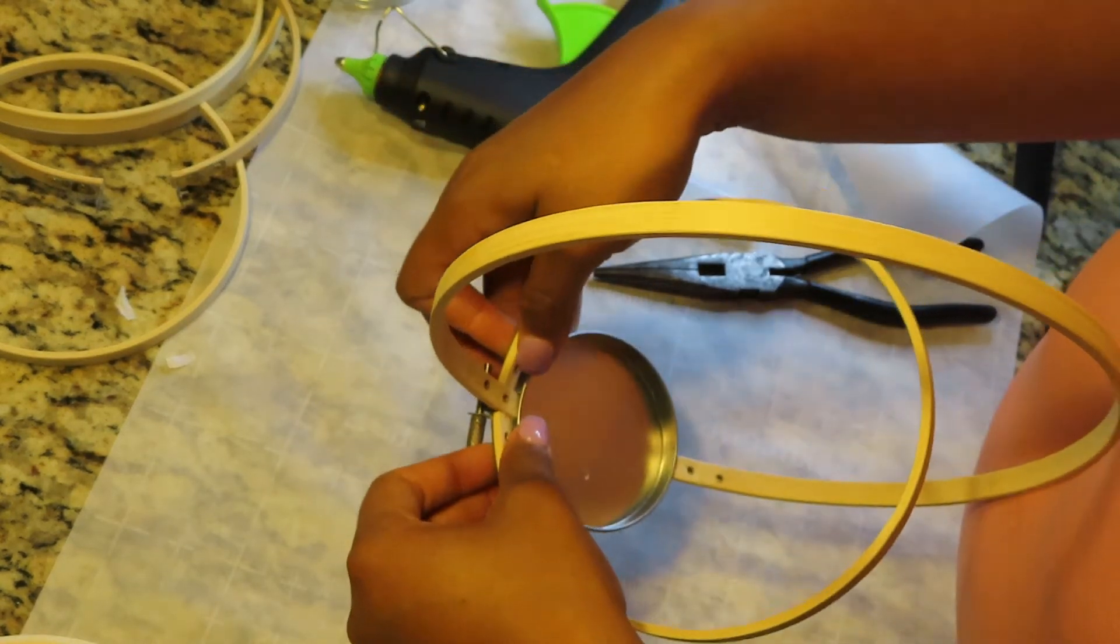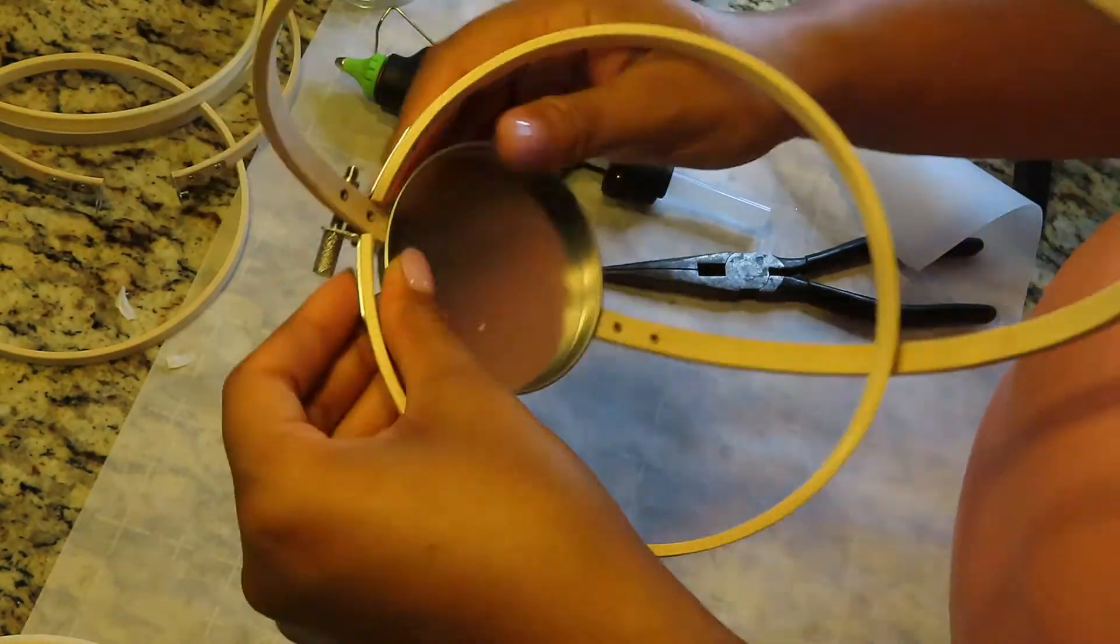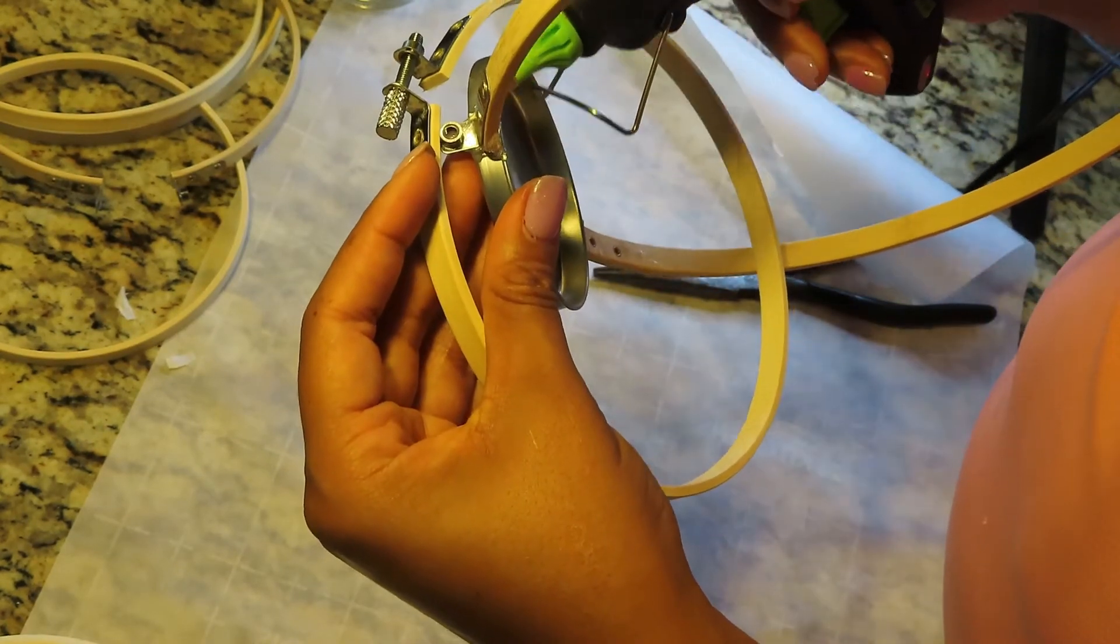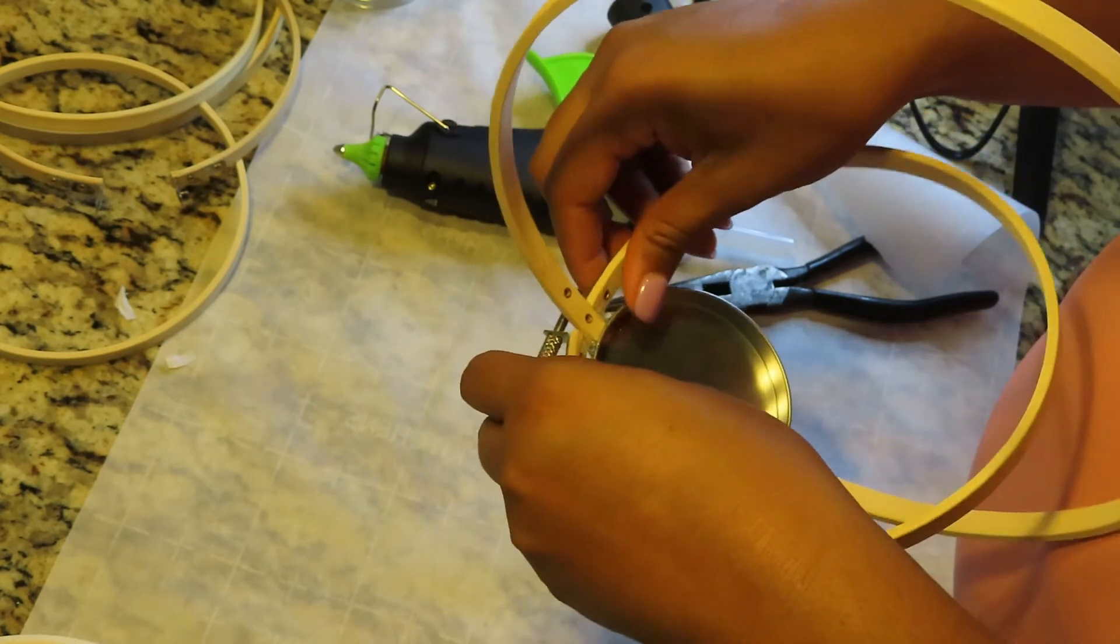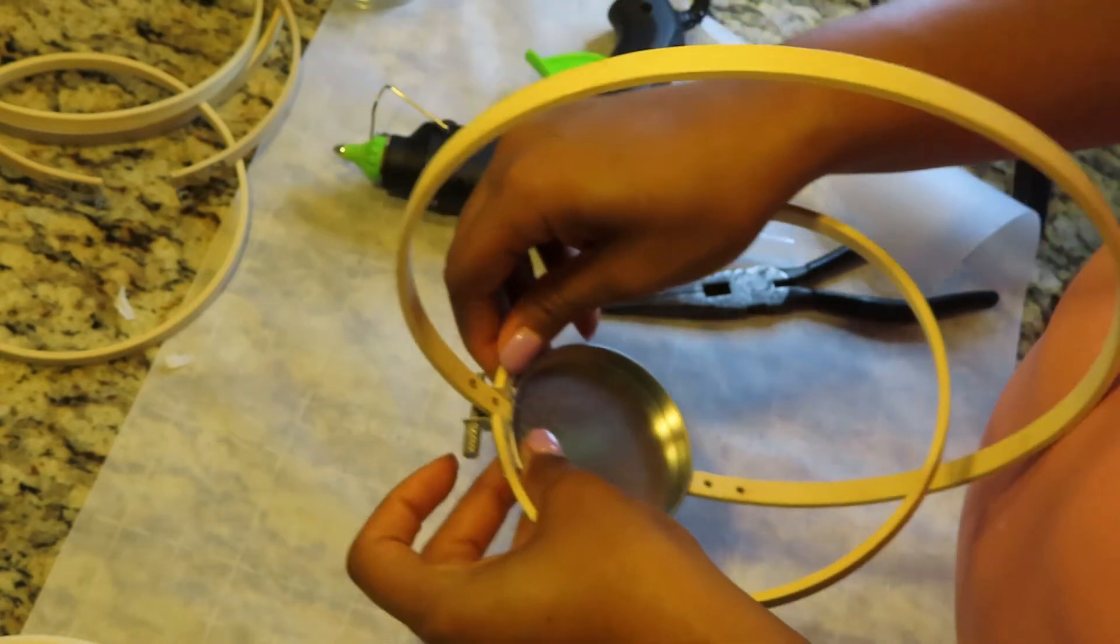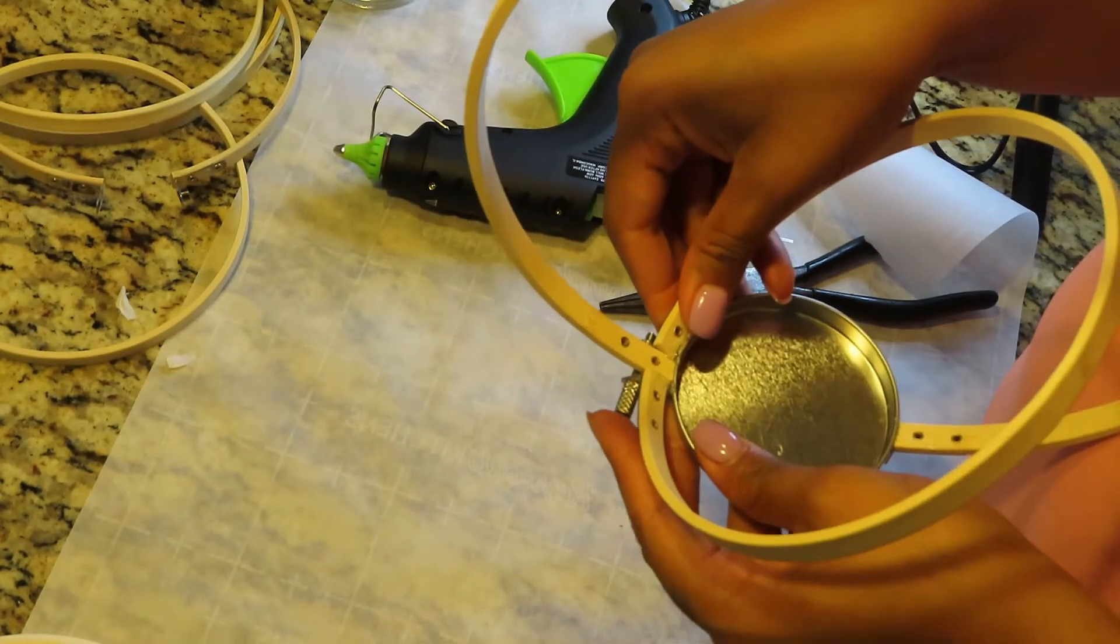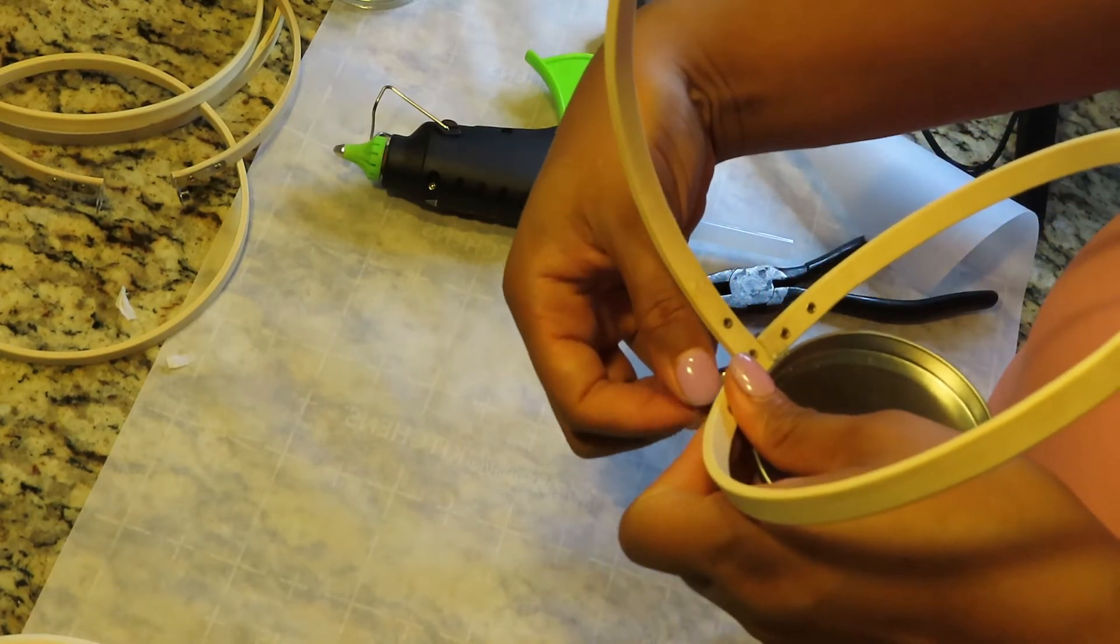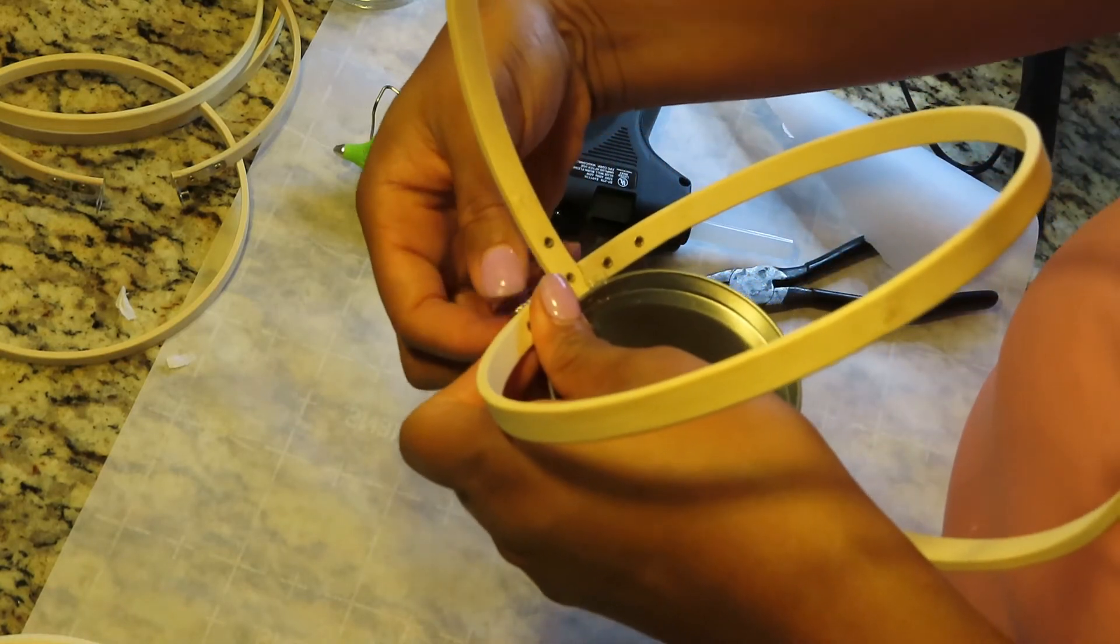Once I had that in place, I'm just gonna take the glue, the hot glue gun, and reinforce it so it stays at an angle. You want to make sure it's tightened up and glued in place.